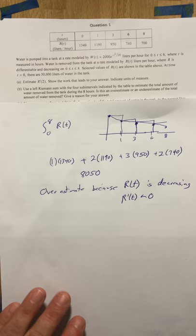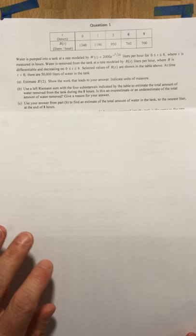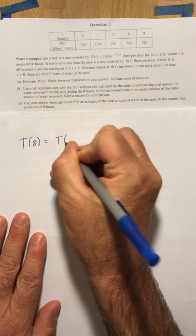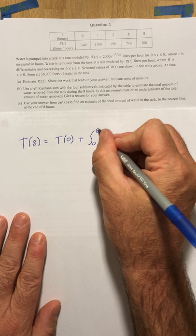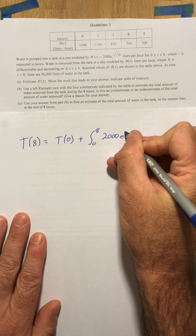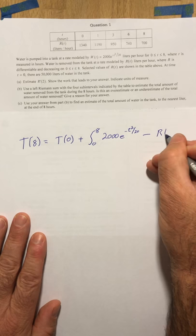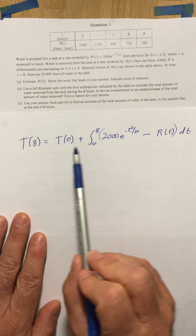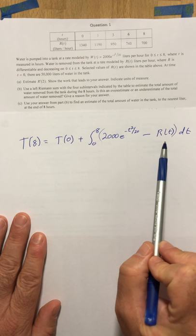All right, letter C said, use the answer from part B to find an estimate for the total amount of water in the tank after 8 hours. So our total amount of water after 8 hours is going to be our initial amount plus the integral from 0 to 8 of the water coming in. So that's going to be 2000 e to the negative T squared over 20 minus our R of T integral. Remember in a total amount question like this, it's the beginning plus the amount that came in minus the amount that came out. The initial amount was 50,000.